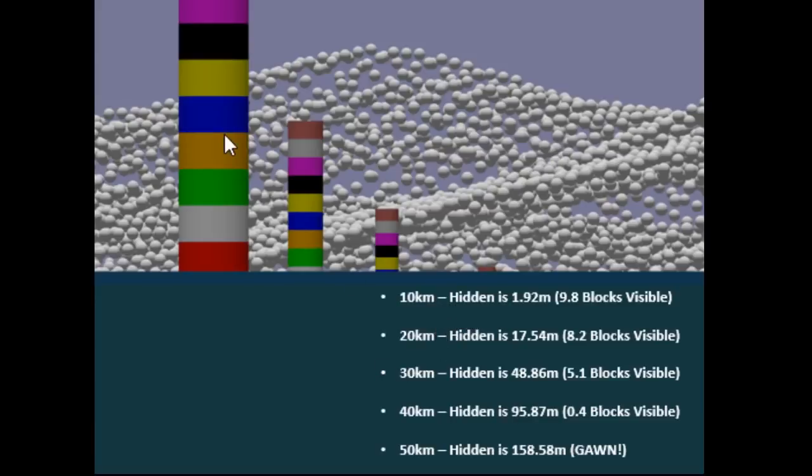So our first column at 10km. The purple block is actually number 3. So 3, 4, 5, 6, 7, 8, 9. Pretty close to 10 blocks. 9.8 blocks visible. That works out.